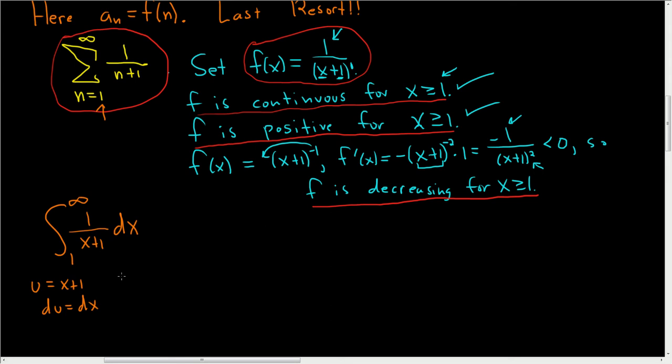Let's go ahead and change the limits. So when x is equal to 1, u is equal to 1 plus 1, which is 2. And if x is infinity or x is approaching infinity, u also approaches infinity. So this will be u on the bottom and dx is du, and we're going from 2 to infinity. This is equal to the natural log of the absolute value of u, and we're going from 2 to infinity.